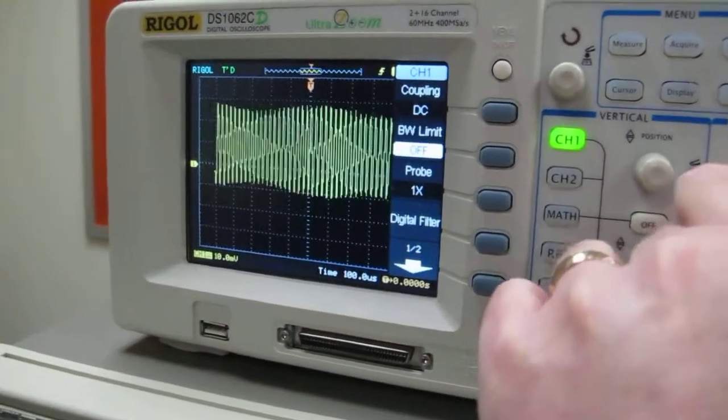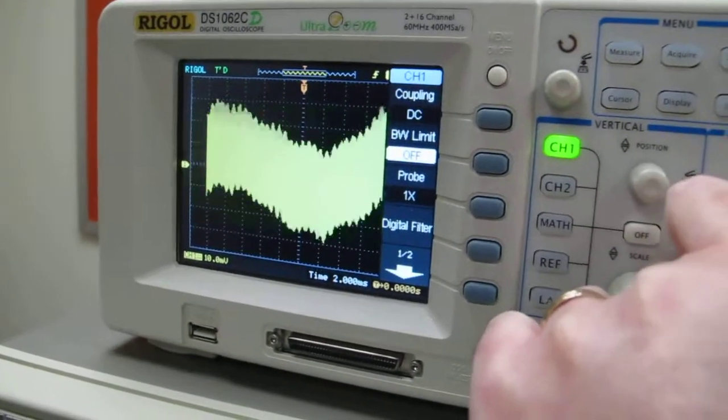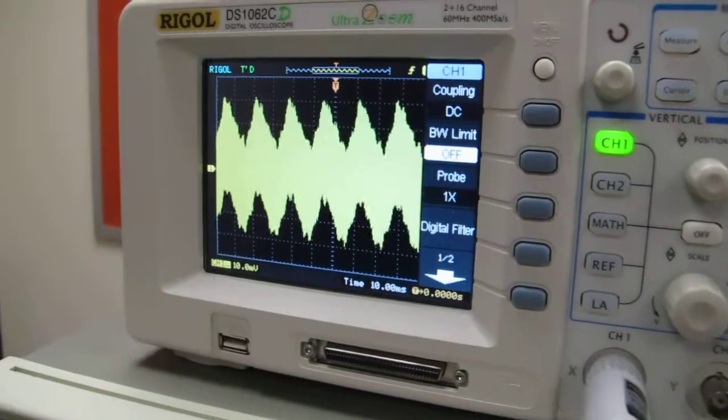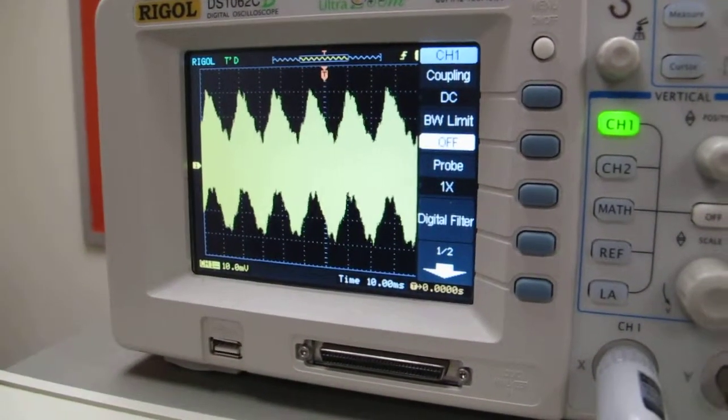Now I'm going to change the horizontal time base down to 10 milliseconds per division, and so now what you see, the periodicity there, is actually the 60 Hertz.